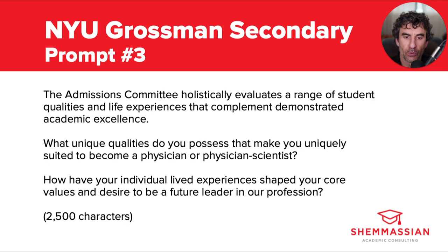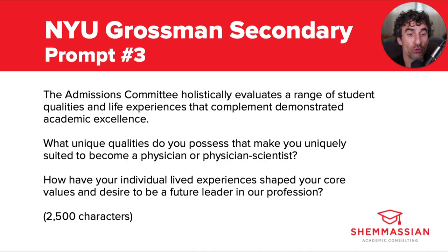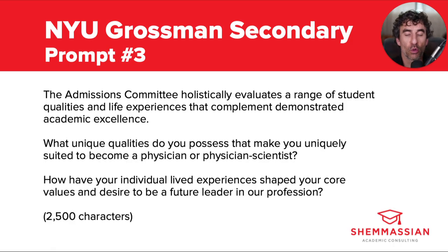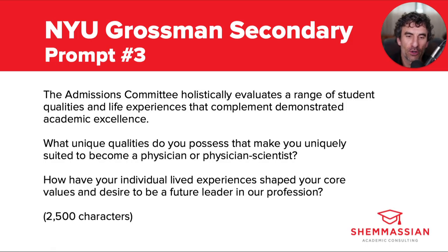The third prompt reads: "The admissions committee holistically evaluates a range of student qualities and life experiences that complement demonstrated academic excellence. What unique qualities do you possess that make you uniquely suited to become a physician or a physician scientist? How have your individual lived experiences shaped your core values and desire to be a future leader in your profession?" They give you a limit of 2,500 characters for this response. This prompt gives you an opportunity to really highlight why you chose medicine and what kind of physician you aim to become, but the language is also pretty dense, so let's break it down.